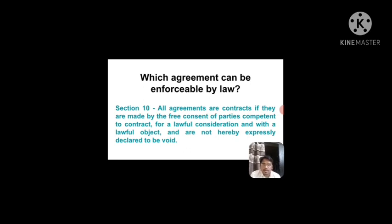The second key element in the definition of contract is 'enforceable by law.' Which agreements can be enforceable by law? To answer this, we look at Section 10 of the Indian Contract Act: all agreements are contracts if they are made by free consent of parties competent to contract, for a lawful consideration and with a lawful object, and such agreement shall not be expressly declared to be void. These are the very essentials of a valid contract as understood from Section 10.